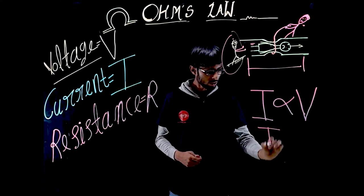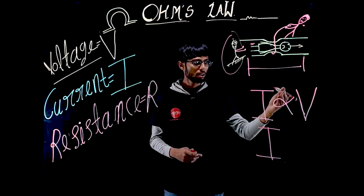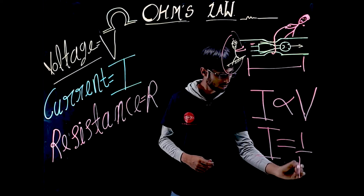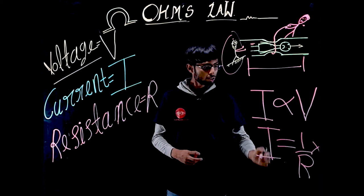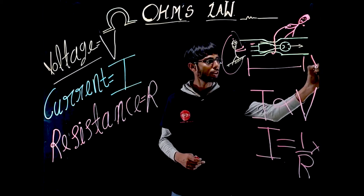Now if we remove this sign of proportionality, we can write it as I equals 1 by R into V, or V equals IR. This is Ohm's law.